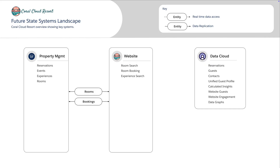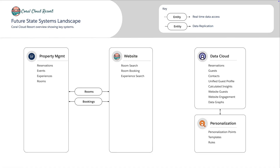For the configurable rules that are going to drive the dynamic assets presented to the website, we're going to use Salesforce Personalization. We don't have requirements for other Marketing Cloud functions at the moment, so this module is a really good fit. Now, how the website communicates with Data Cloud and Salesforce Personalization is through the Web Interactions SDK.